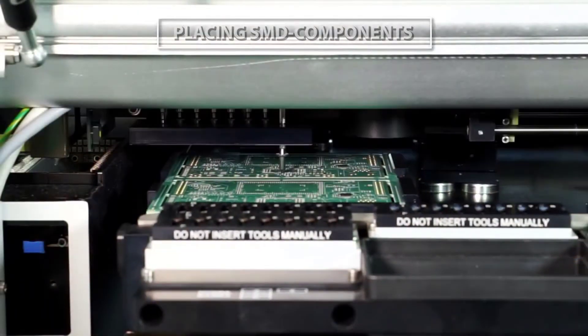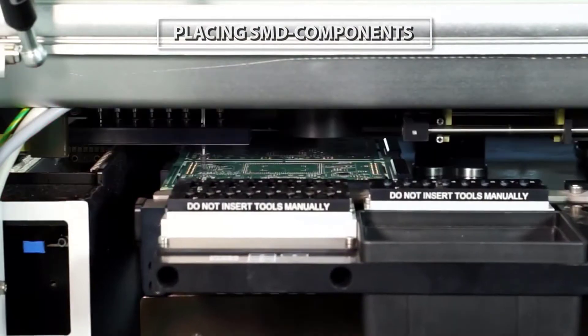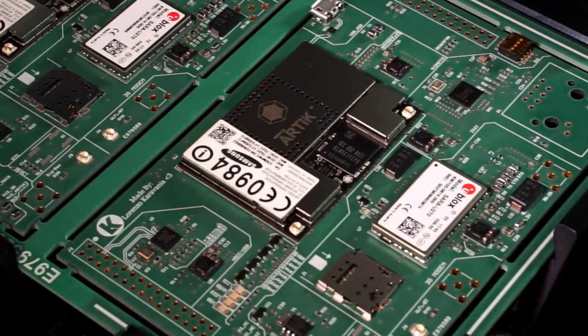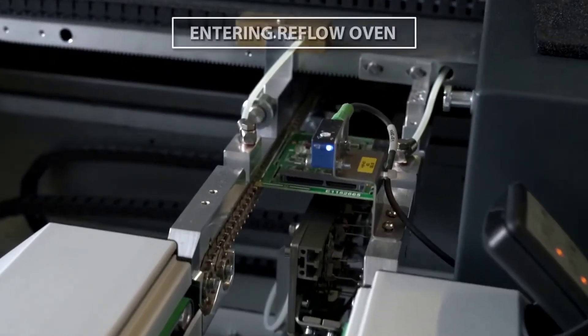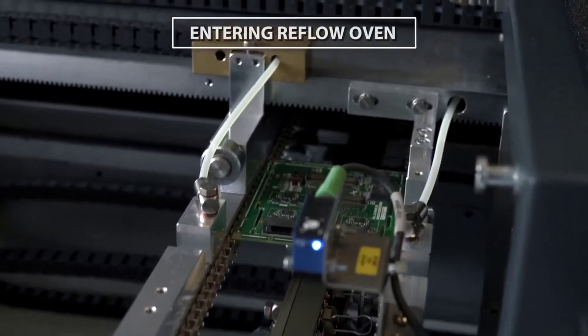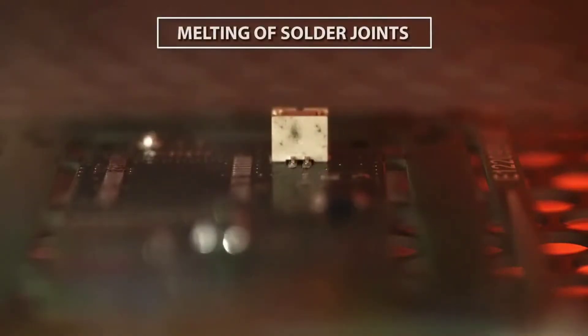During the pick and place operation, components are placed on the board on the paste deposits. A reliable electrical and physical connection is then made during the reflow soldering process. The solder paste melts during this process and cools down again to create a good solder joint.